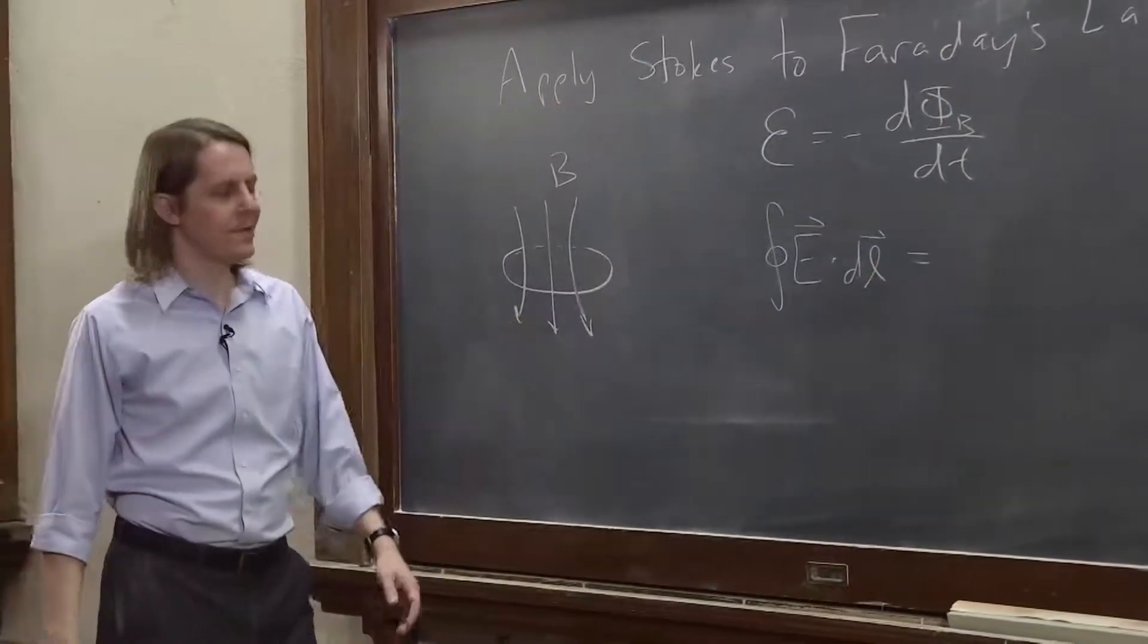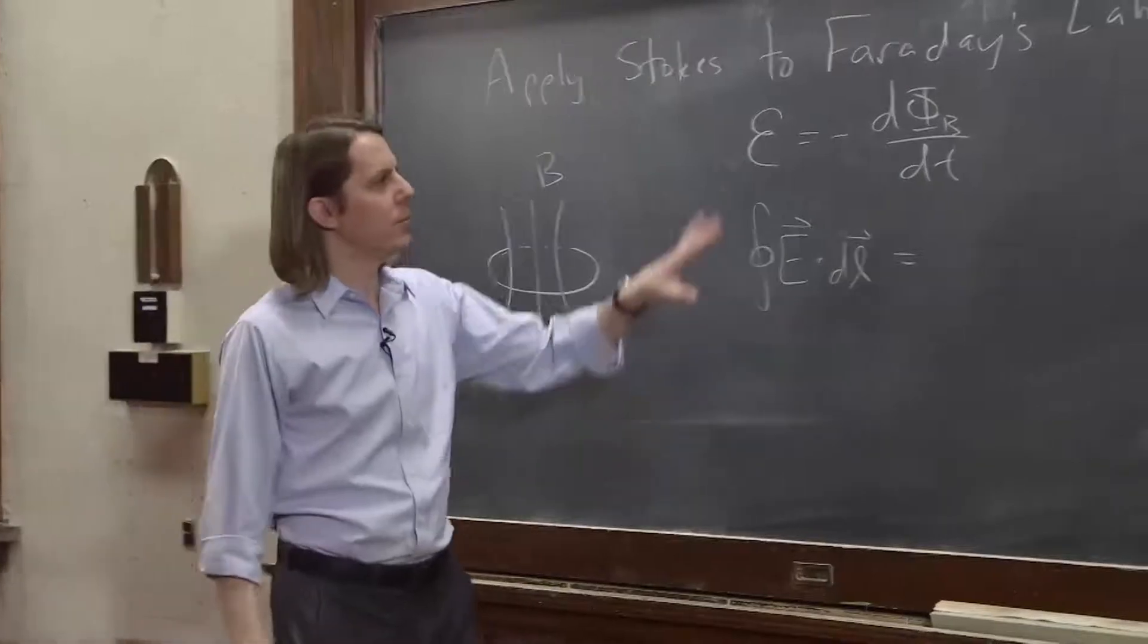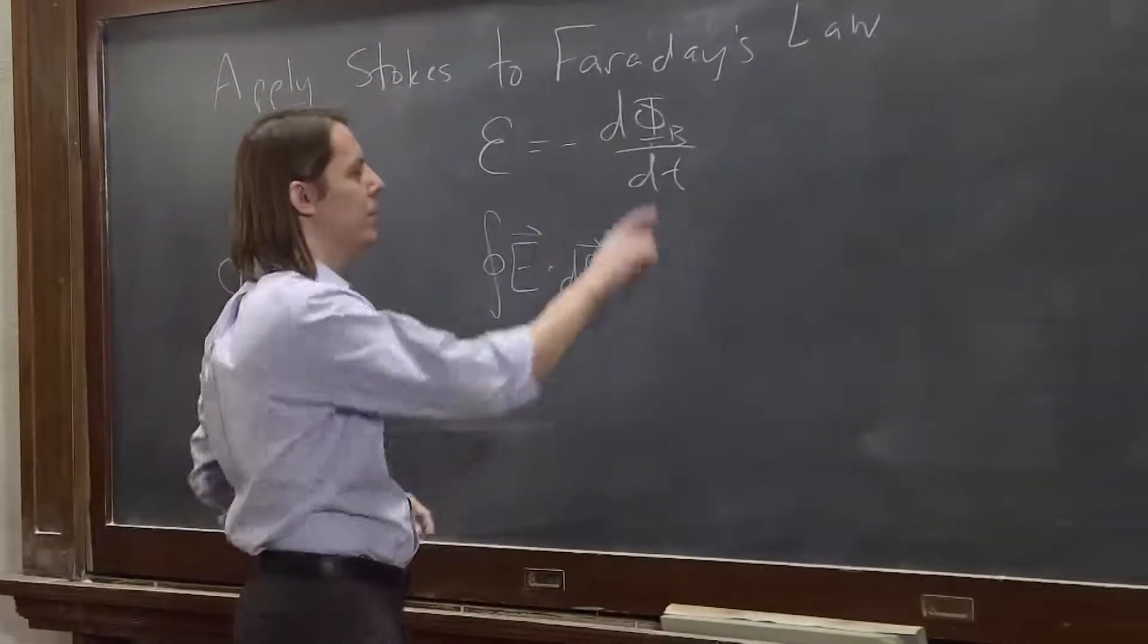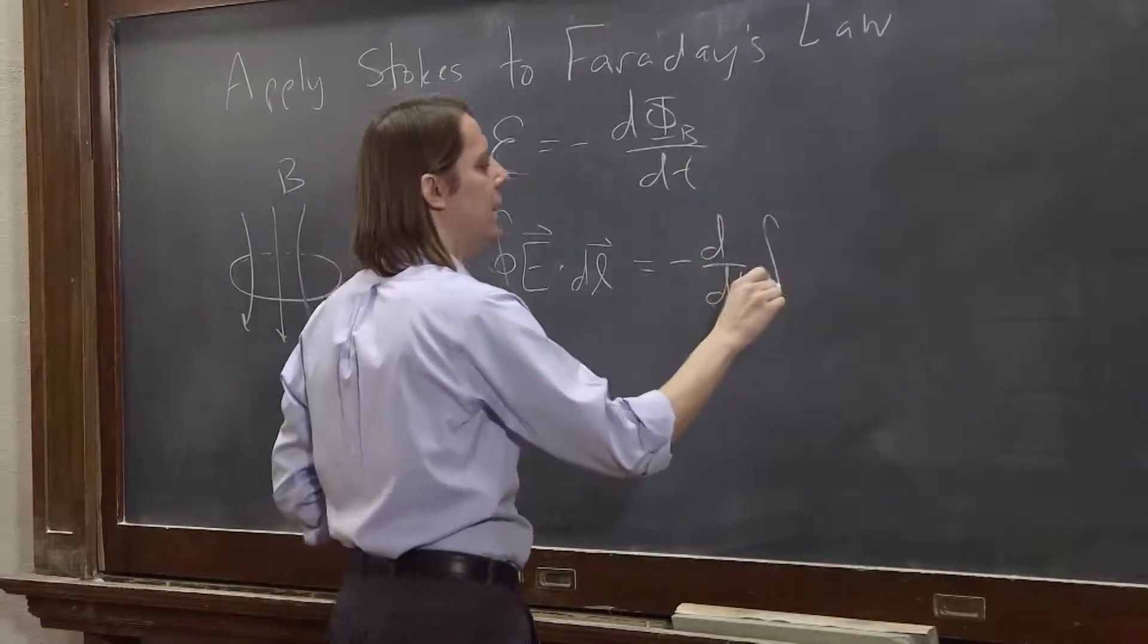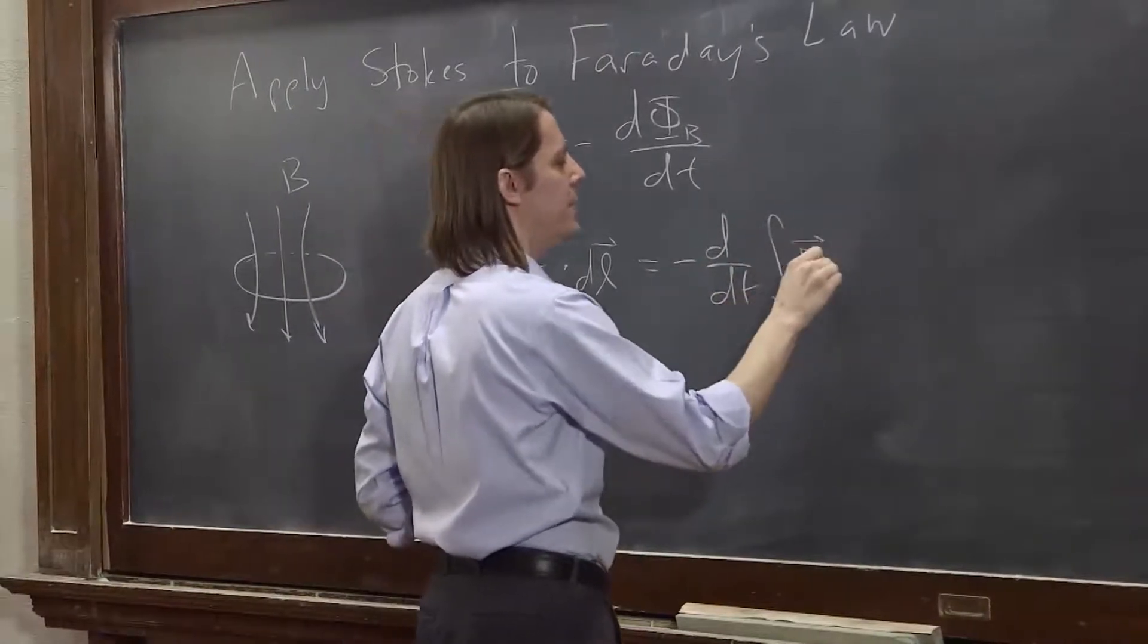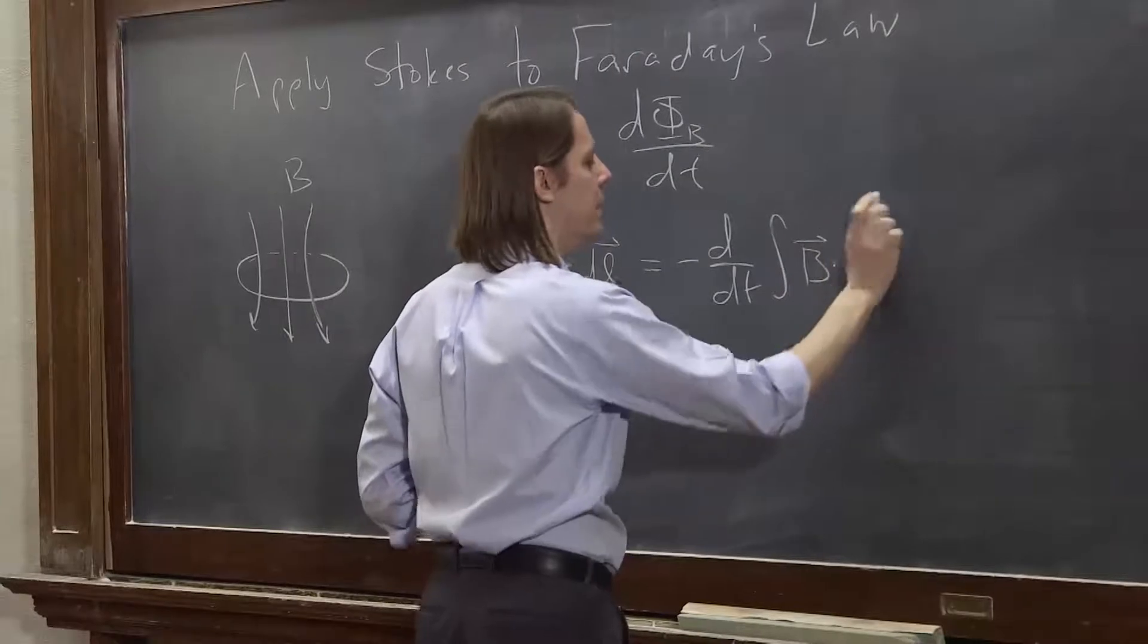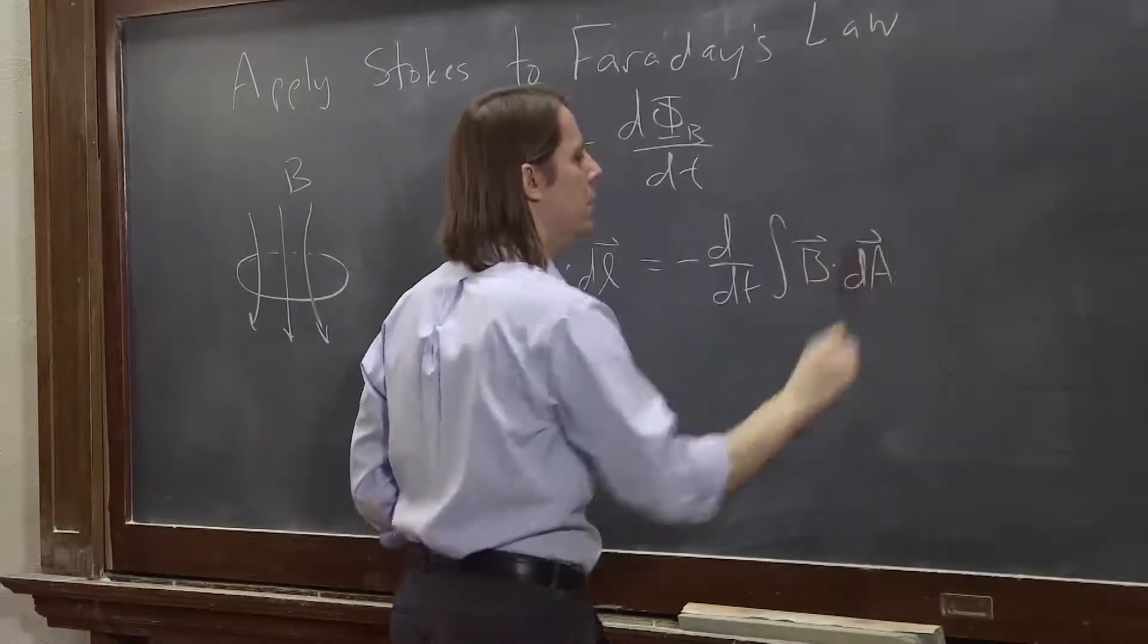So that's another way to write Faraday's law. And then we can also just turn this into an integral, this is b dot da. So minus d dt times the integral of b dot da, like that.